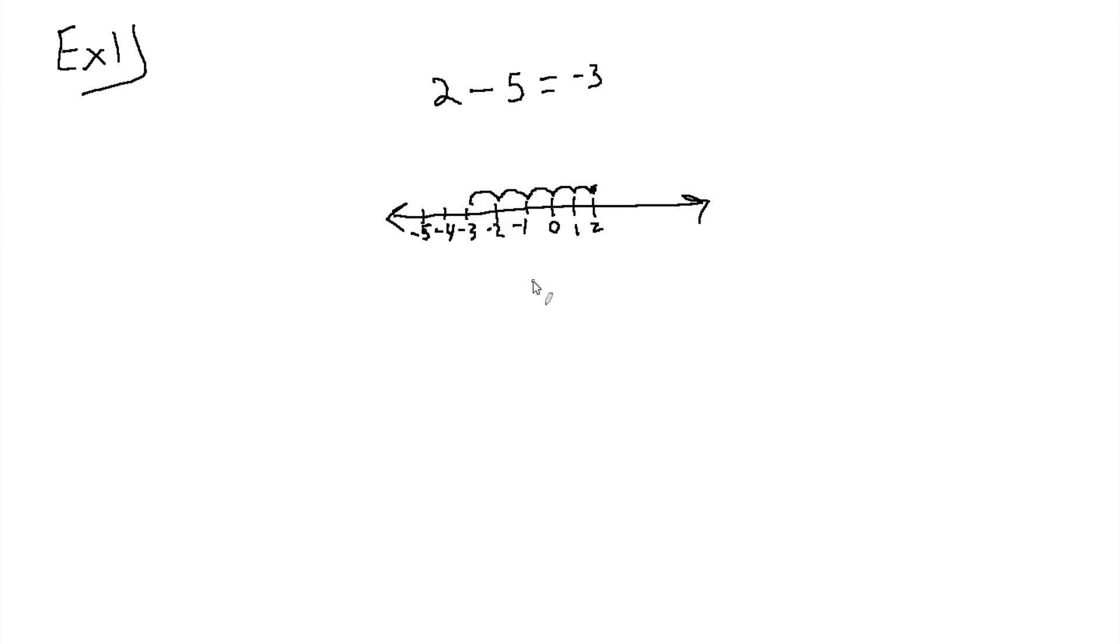1, 2, 3, 4, 5. You end up with negative 3. Now, we can do the same thing if we start off at negative 5 and we go up 2. 1, 2, you still end up at negative 3. Our answer would be negative 3.